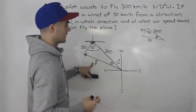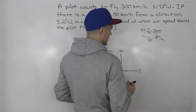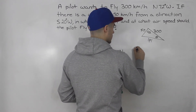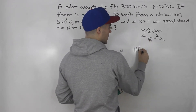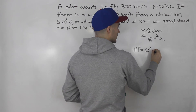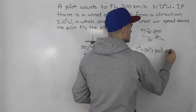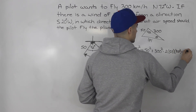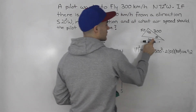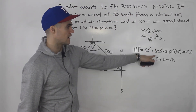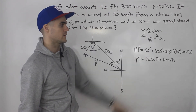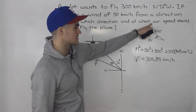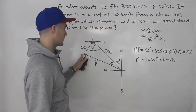For the airspeed, we can use the cosine law. The opposite side squared equals 50 squared plus 300 squared minus 2 times 50 times 300 times cosine of 92 degrees. When you do that calculation and take the square root, you get 305.85 kilometers per hour. That represents the airspeed — the speed of the plane before it hits the wind.